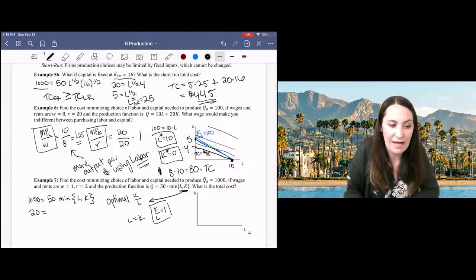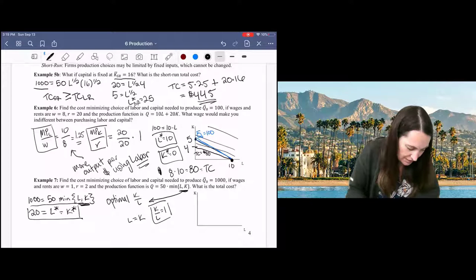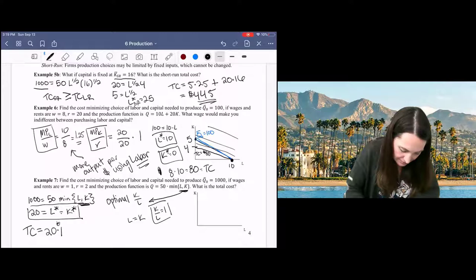And so I can see here, I'm using 20 units of each product, and the total cost of that would be 20 times $1 plus 20 times $2, which gives me a total cost of $60.